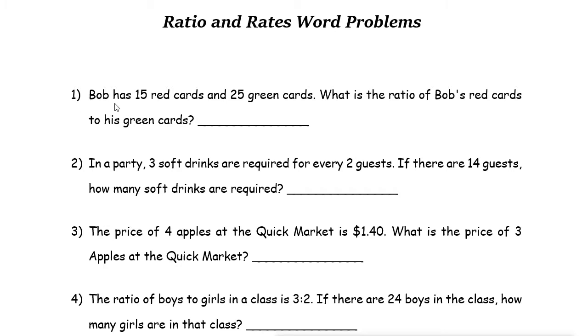The first one here says Bob has 15 red cards and 25 green cards. What is the ratio of Bob's red cards to his green cards? So you just need to write red cards is 15 and green cards 25, so it is 15 to 25. You can simplify this. If you divide both by 5, 15 divided by 5 is 3, 25 divided by 5 is 5. So 3 to 5 is the ratio of red cards to green cards.